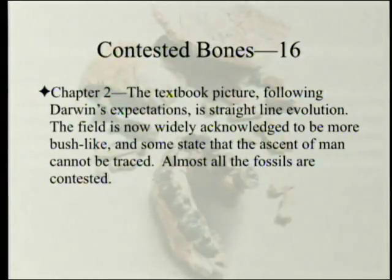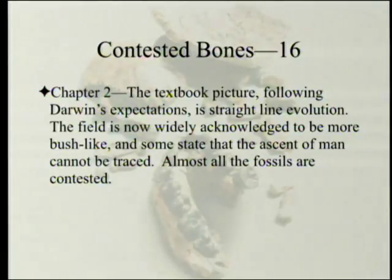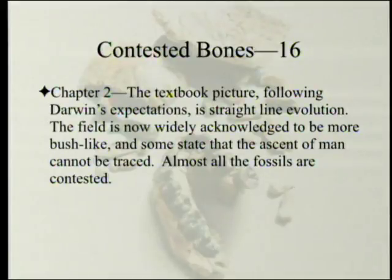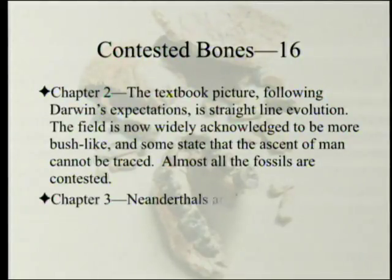Chapter 2 continues. The introduction of the textbook picture following Darwin's expectation is straight-line evolution. The field is widely acknowledged not to be straight-line, rather bush-like. Some state that the ascent of man cannot presently be traced and may never be traced—these are evolutionists. Almost all the fossils are contested.